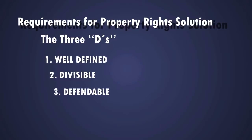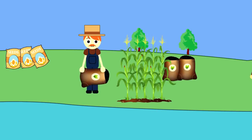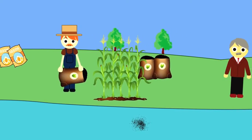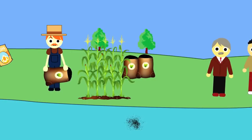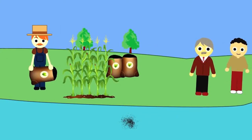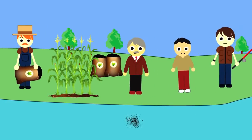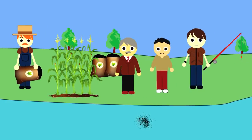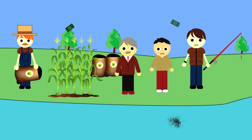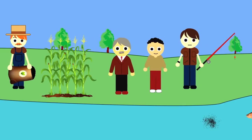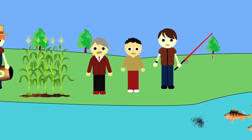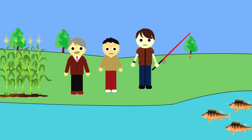Let's go back to our example. Let's assign the property rights of the lake to the farmer. You may first imagine that the farmer doesn't change his or her behavior. However, now the fishermen and recreationists downstream can negotiate with the farmer to reduce the amount of fertilizer laid on the field. This reduces the amount of fish death downstream.